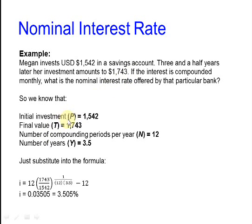So we know that P, the initial investment, is $1542, the final value is $1743, the number of compounding periods per year is 12, and the number of years is 3.5. Just substitute into the formula and do the math. You get 3.505%.